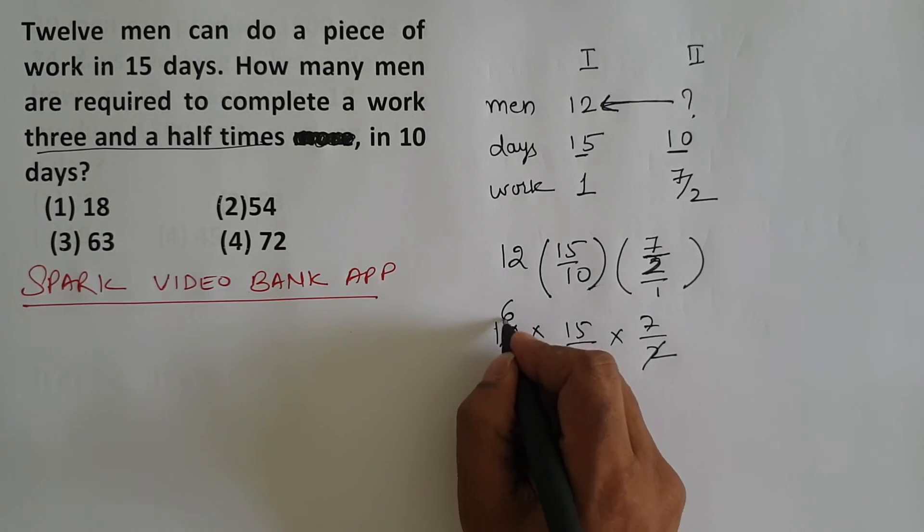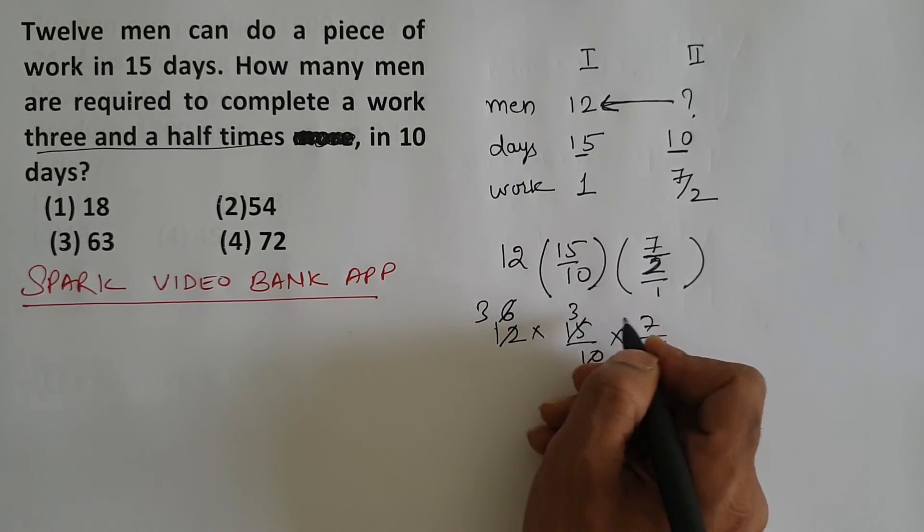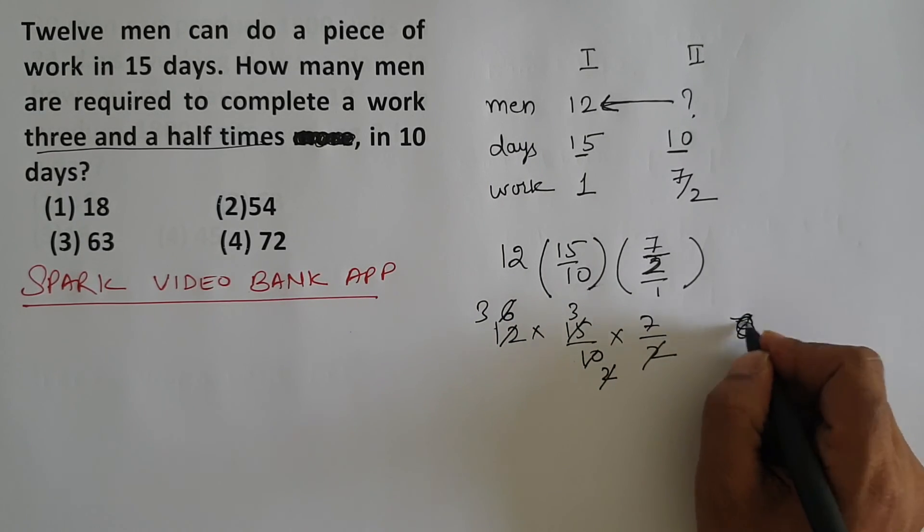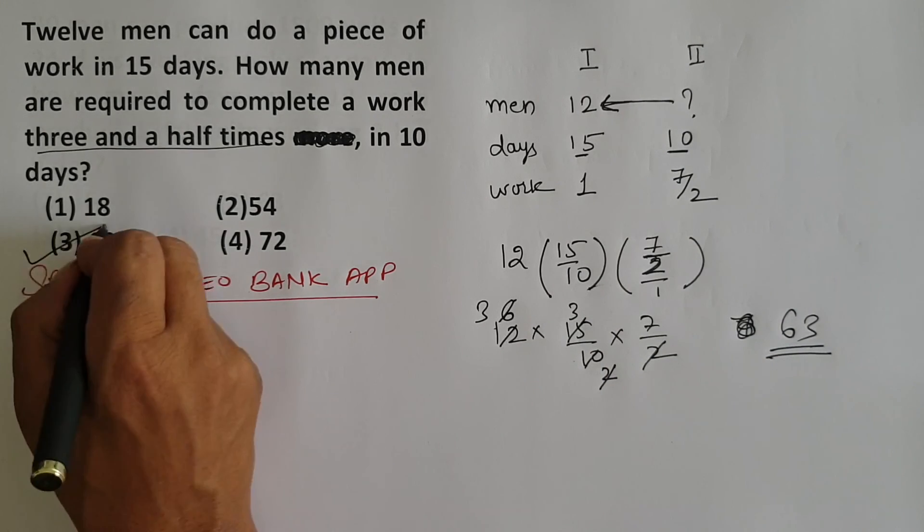So this will be how much - 2 sixes are 12, 5 threes are 15, 5 twos are 10, 2 threes are 6, 3 threes are 9, sevens are 63. Finally the men we'll need, how many will we need - 63.